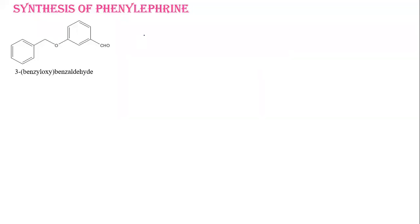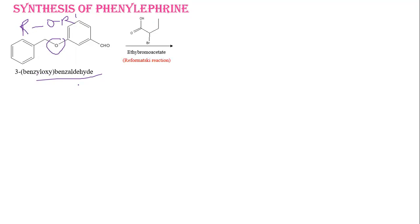Today we are going to discuss the synthesis of phenylephrine, which is basically an alpha adrenergic agonist. The starting material for phenylephrine is 3-benzyloxybenzyldehyde. We can call it a benzyl ether because ether is the main functional group, with the formula ROR'. So this starting material is 3-benzyloxybenzyldehyde.